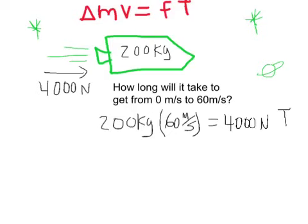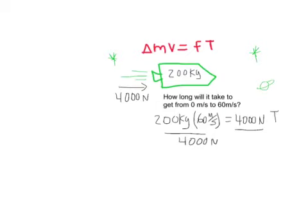Now to solve for time, all we have to do is divide both sides by 4000 newtons. Let me shrink this a little bit here.